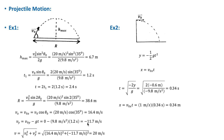The magnitude of the velocity (speed) just before the ball hits the ground is the square root of v_x² + v_y², which equals 20 m/s.